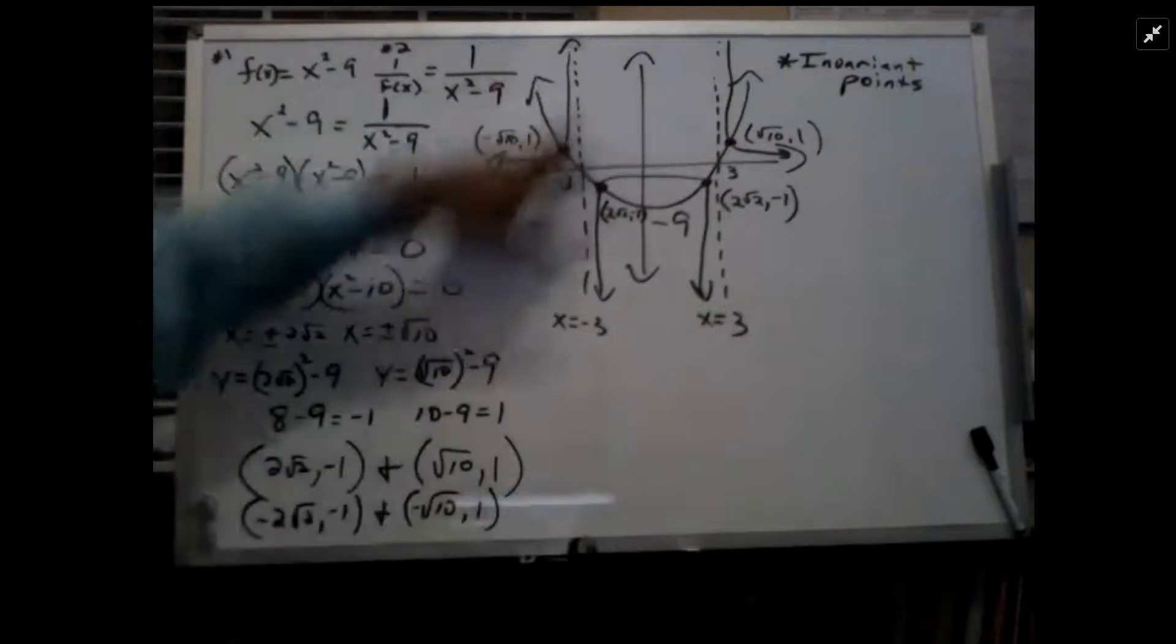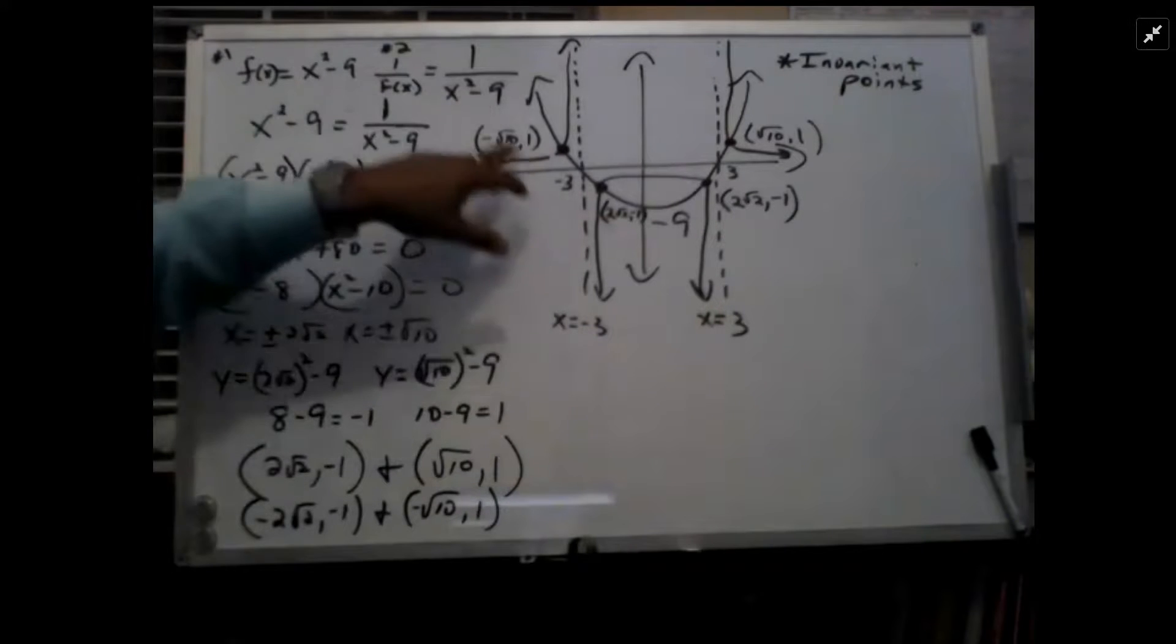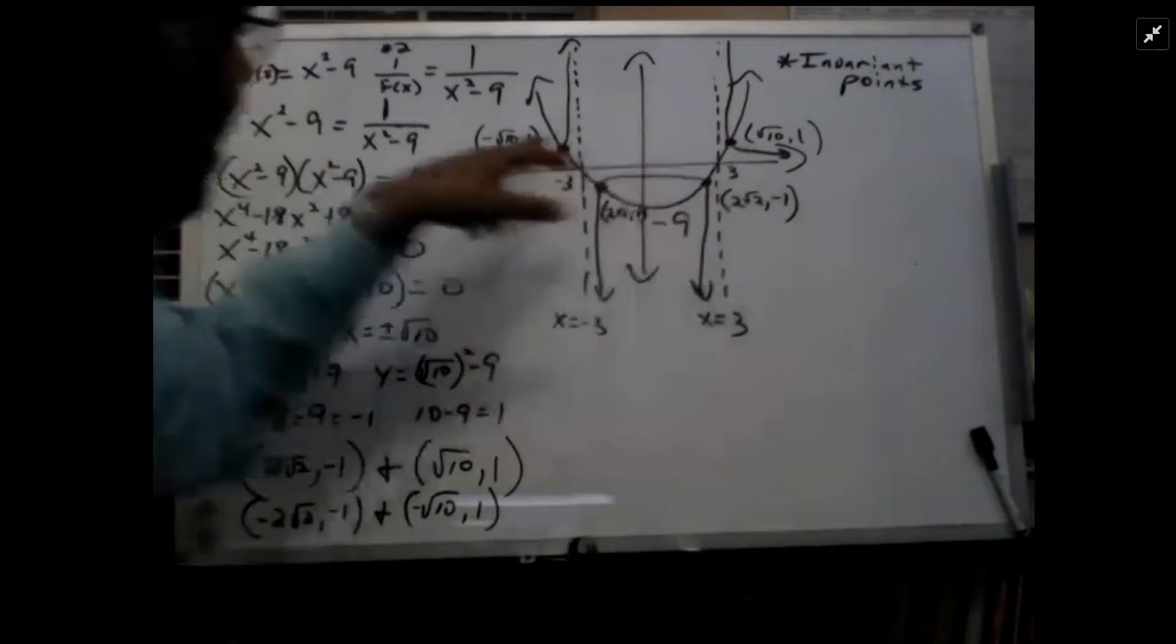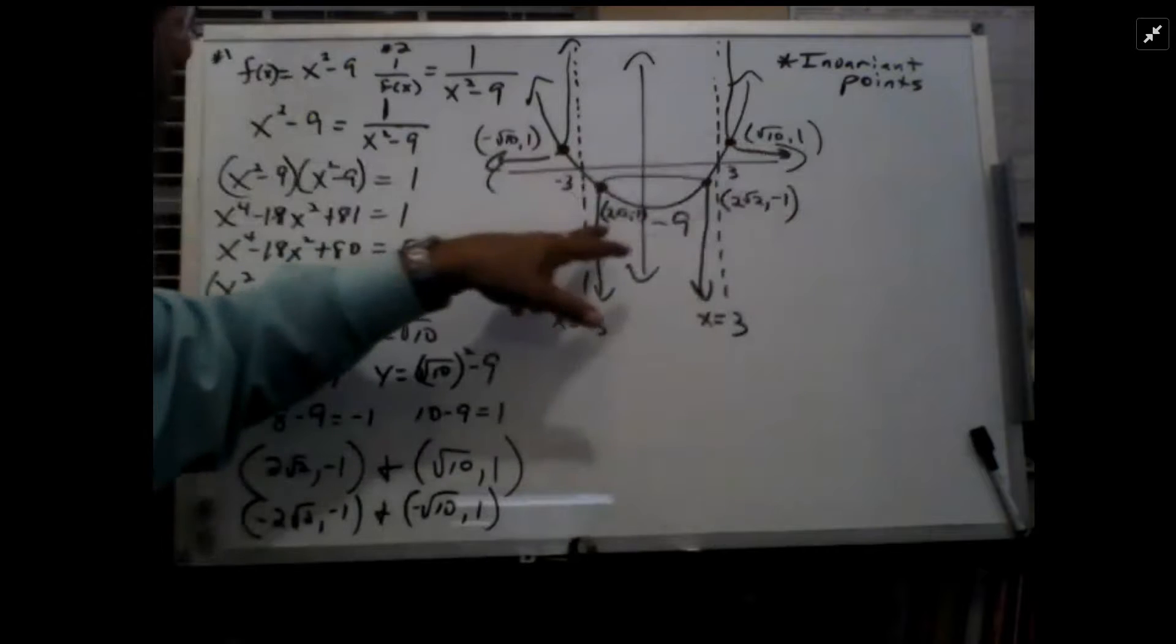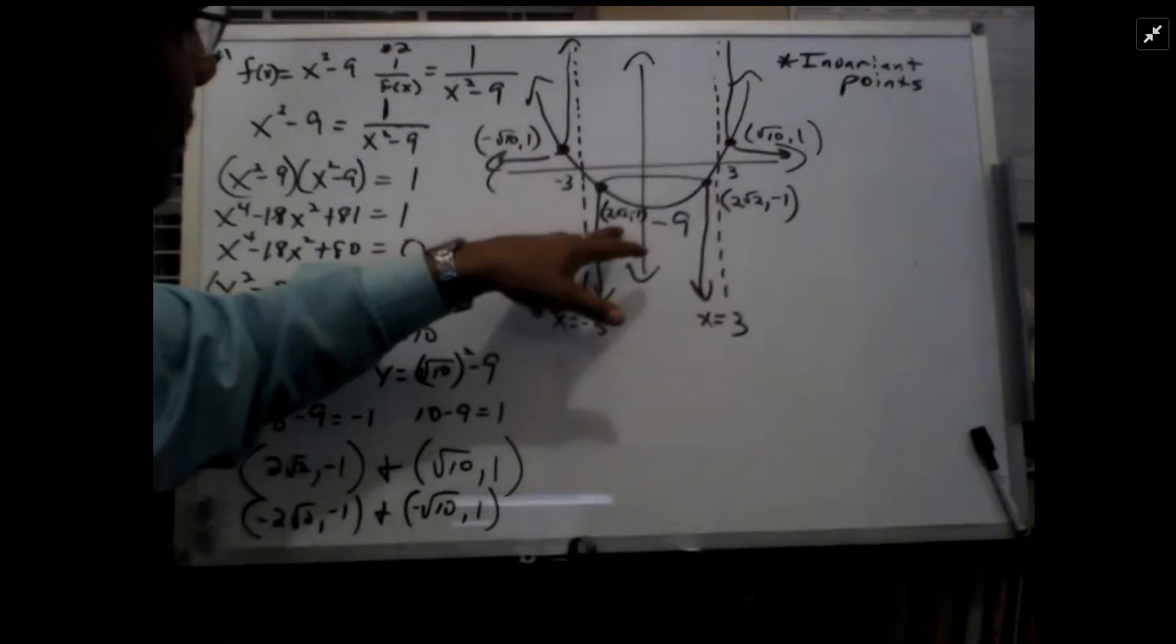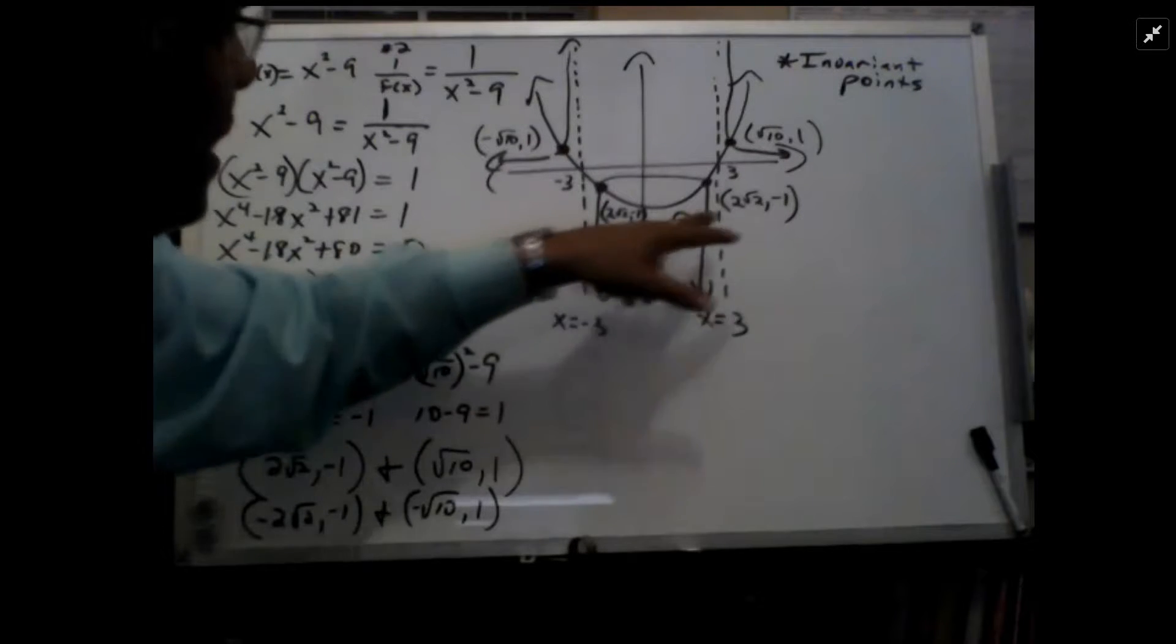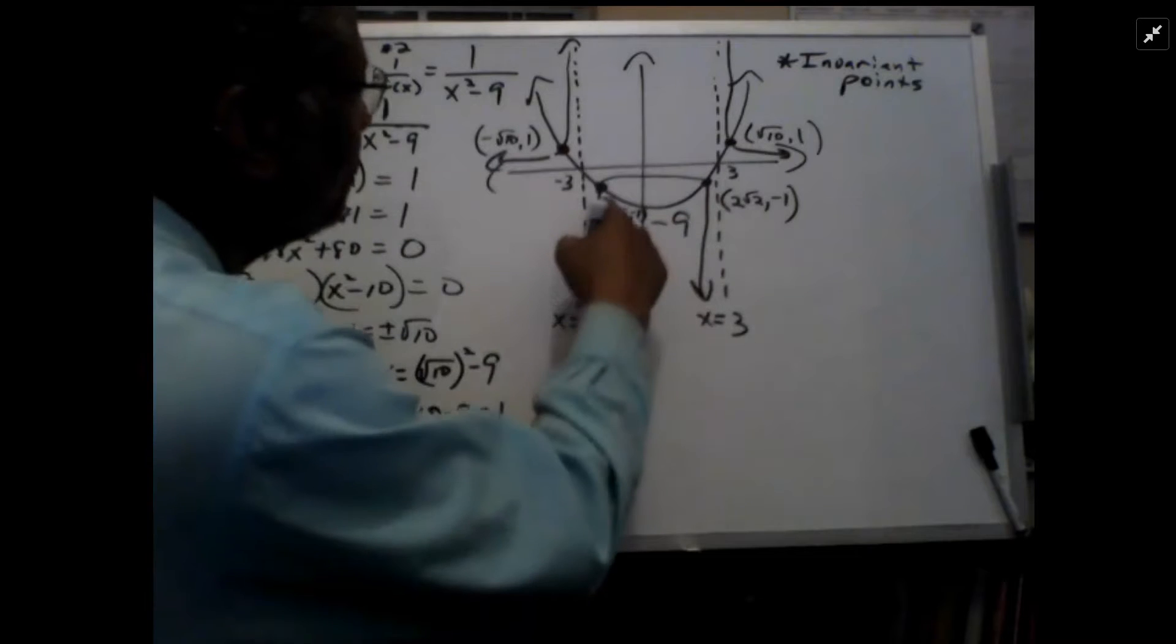And then the 1 over x squared minus 9 intersects at negative radical 10, 1, and radical 10, 1. And also it intersects at 2 radical 2, negative 1, and negative 2 radical 2, negative 1.